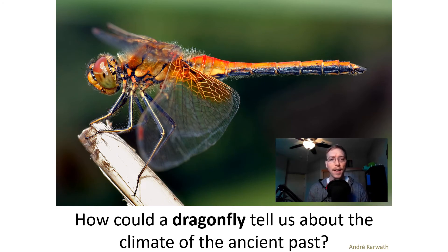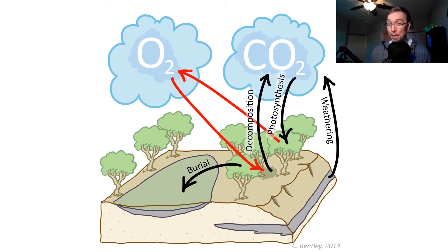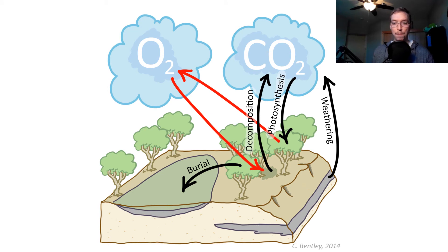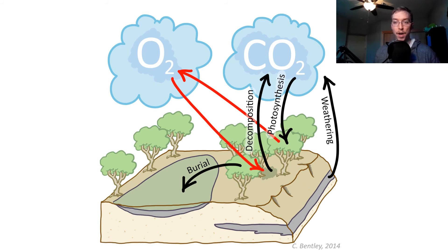So how do we do it? Let's look at this dragonfly. How could a dragonfly tell us about the climate of the ancient past? Modern climate is tricky because it is such a complicated and complex system, as you have been learning this whole semester. The same is true for paleoclimate, which is even more complicated because we don't have anything to measure it directly. However, some basic principles guide the work that paleoclimatologists do. Consider this diagram by C. Bentley, which shows the relationship between two atmospheric gases, oxygen and carbon dioxide, and how they exchange atoms of matter with other reservoirs such as vegetation and fossil fuels.